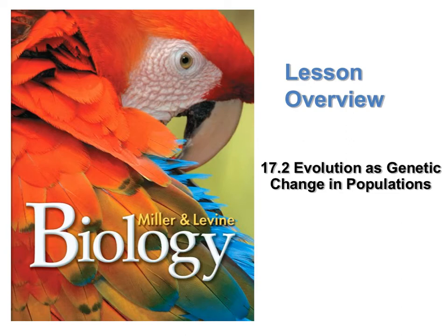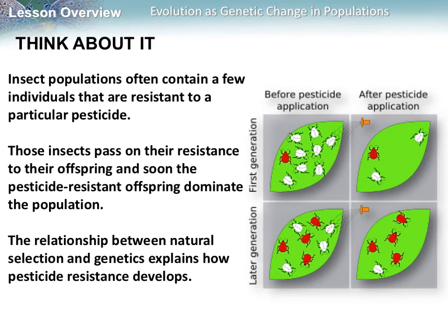Today we're going to continue our discussion of evolution and discuss how it changes the genetics of a population. If you think about an insect population and you apply a pesticide, there are a few that are resistant to that pesticide, so a few are going to survive. Those insects pass their resistance on to their offspring, and in the later generation, notice the red ones are surviving more because they have the pesticide resistance.